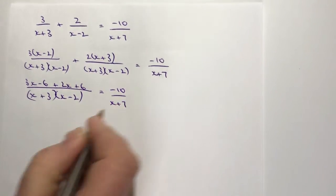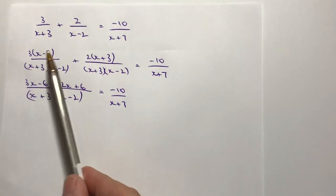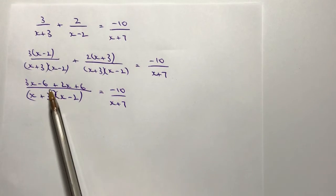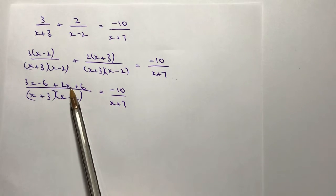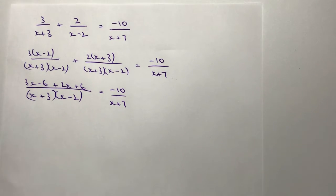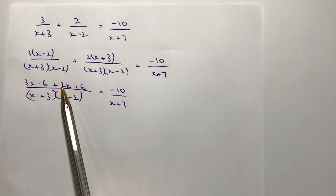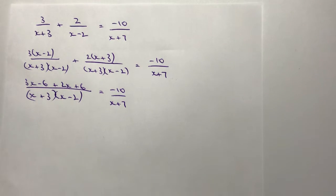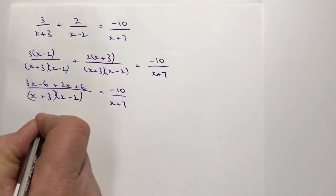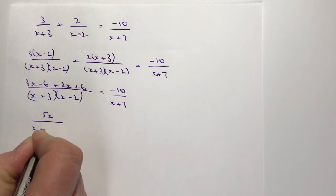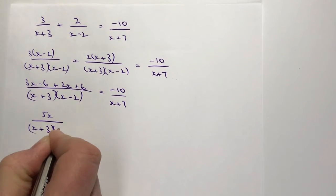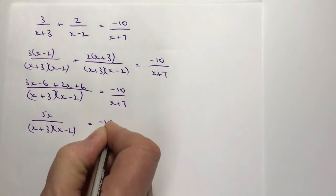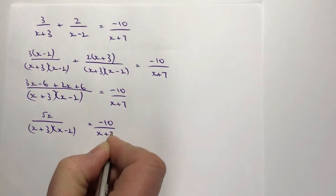Now what I've done here is I've just worked out this expansion and then I'm going to simplify and gather up the like terms of this numerator at the top here. What I find is I've got 3x plus 2x, well that's going to be 5x. And then I've got minus 6 plus 6, well that's going to disappear. So actually after all of this work, what I end up with is 5x over x plus 3 times x minus 2, and that's equal to minus 10 over x plus 7.